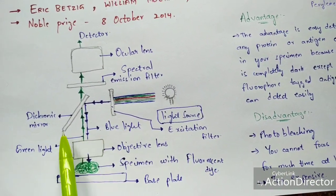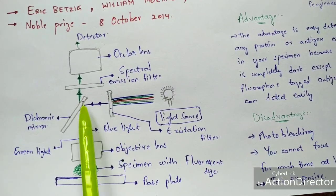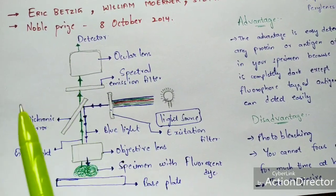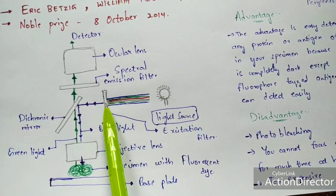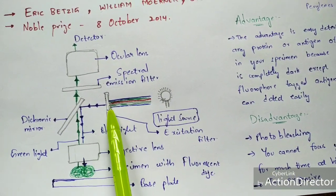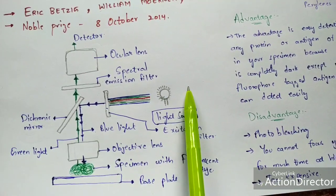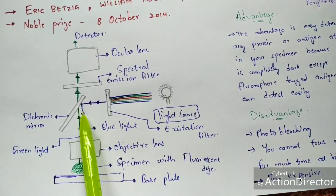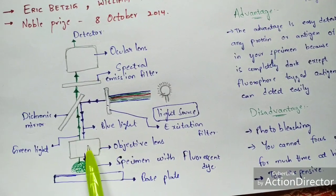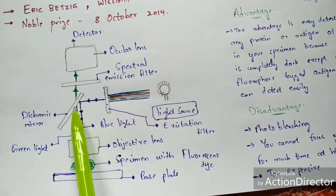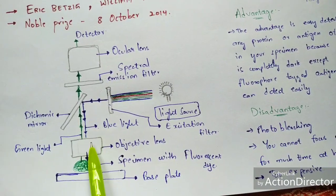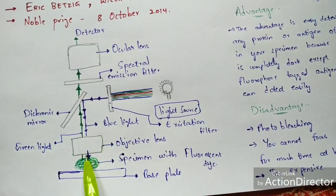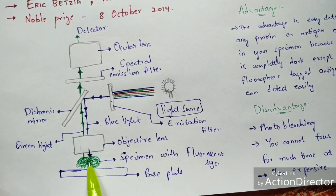The dichroic mirror plays a major role because it exhibits two properties: it reflects the light, and it also sends light to the image detector. The dichroic mirror reflects the blue color light and directs it to pass upon the objective lens.